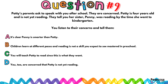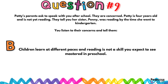Question number nine: Patty's parents ask to speak with you after school. They're concerned because Patty is four years old and not yet reading. They mention her sister was reading by the time she went to kindergarten. You listen to their concerns and tell them: B) Children learn at different paces and reading is not a skill you expect to see mastered in preschool. That is the correct answer.